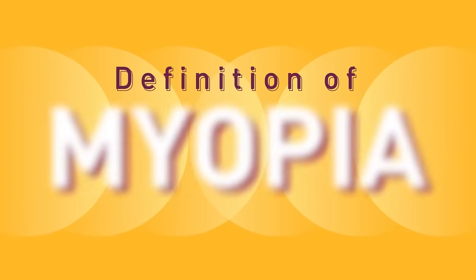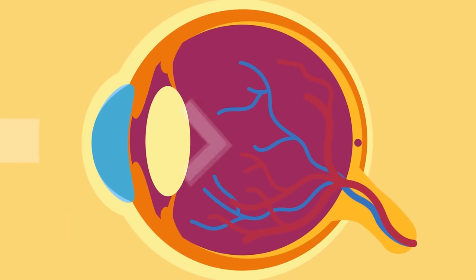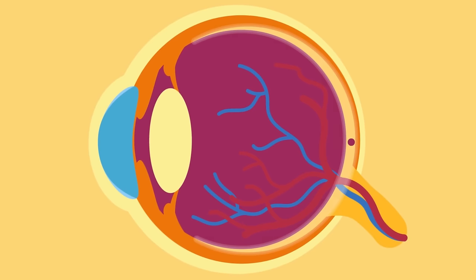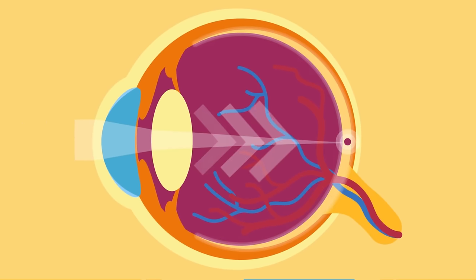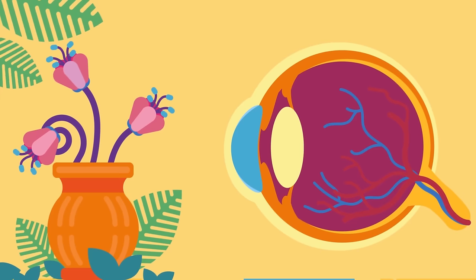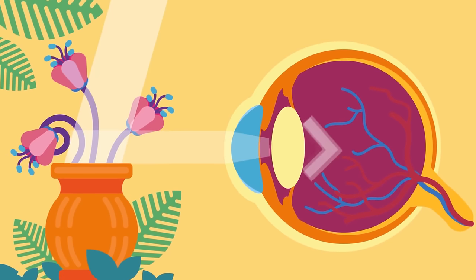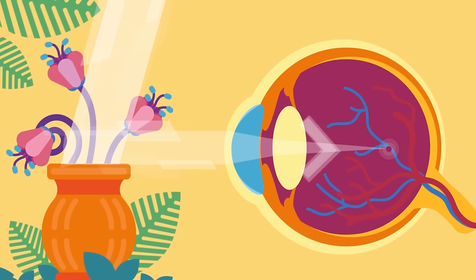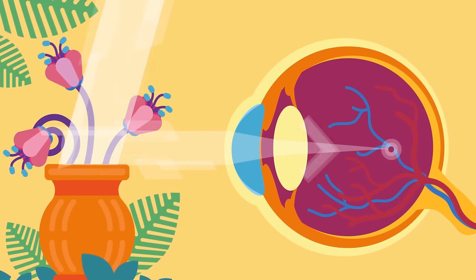Definition of myopia. It is a form of refractive error — inability to refract, bend, or focus the light rays properly — in which parallel rays of light coming from a distant object, after entering the eye, are focused in front of the retina instead of on the retina, with eye muscles at rest.